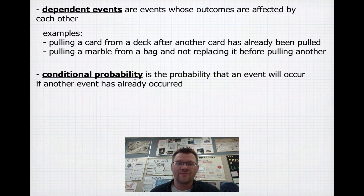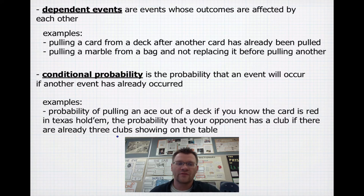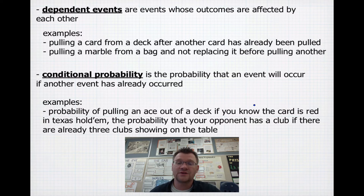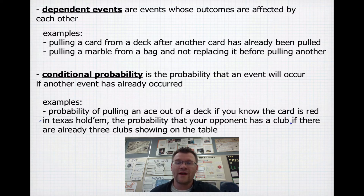Conditional probability is the probability that an event will occur if another event has already occurred. For example, the probability of pulling an ace out of a deck if you know the card is red changes what you know about the probability. In Texas Hold'em, the probability that your opponent has a club if there are already three clubs showing on the table — that is conditional probability.